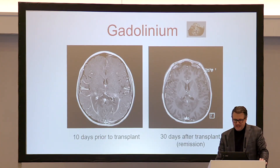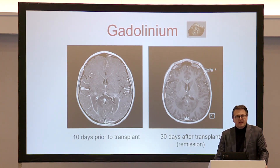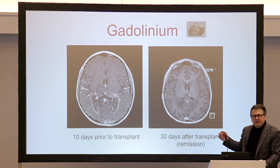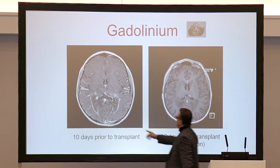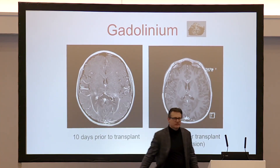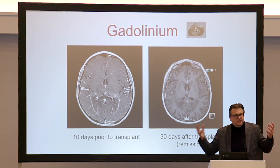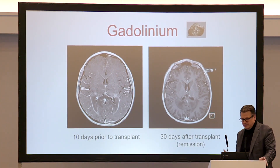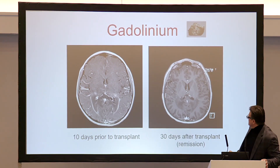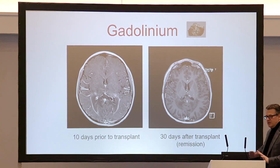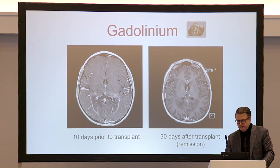Commenting on gadolinium: it's a heavy metal infused during MRIs. It's supposed to stay in your blood vessels unless there's blood-brain barrier breakdown, in which case it leaks out and causes a smudge. In cerebral ALD it causes a garland ring of enhancement surrounding the lesion — think of it like a forest fire, with destruction behind it and new forest in front. In the same child 30 days after transplant, that gadolinium enhancement is completely gone. That's what we call remission for cerebral ALD.